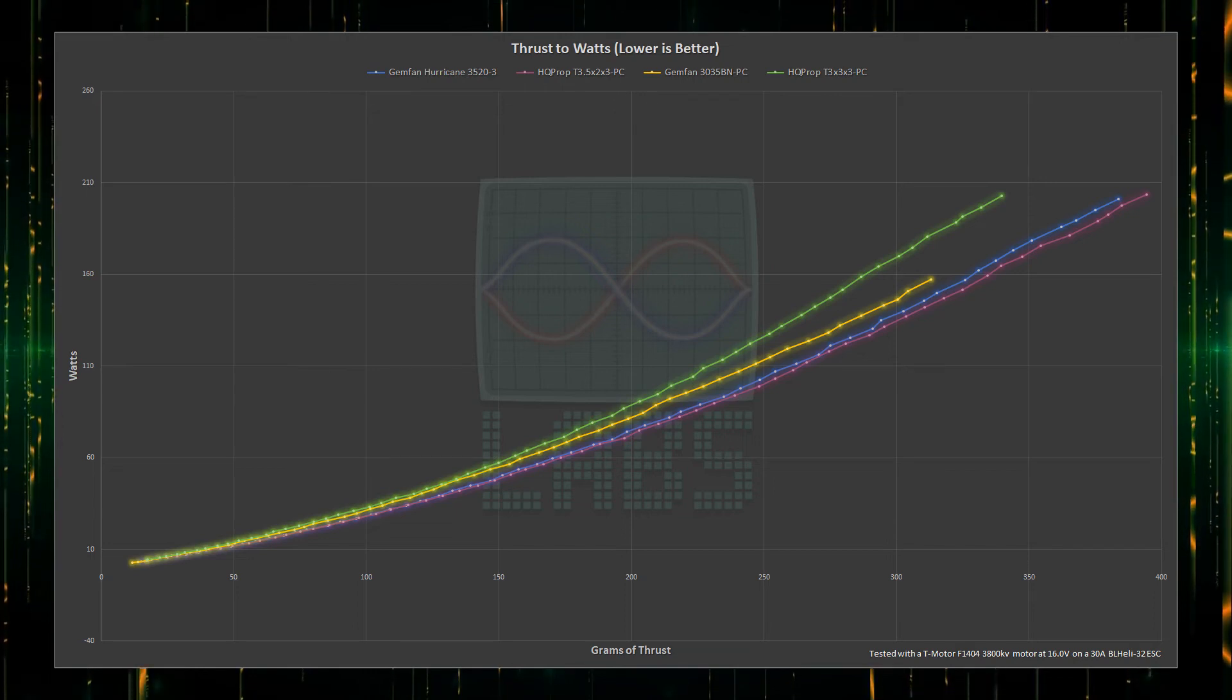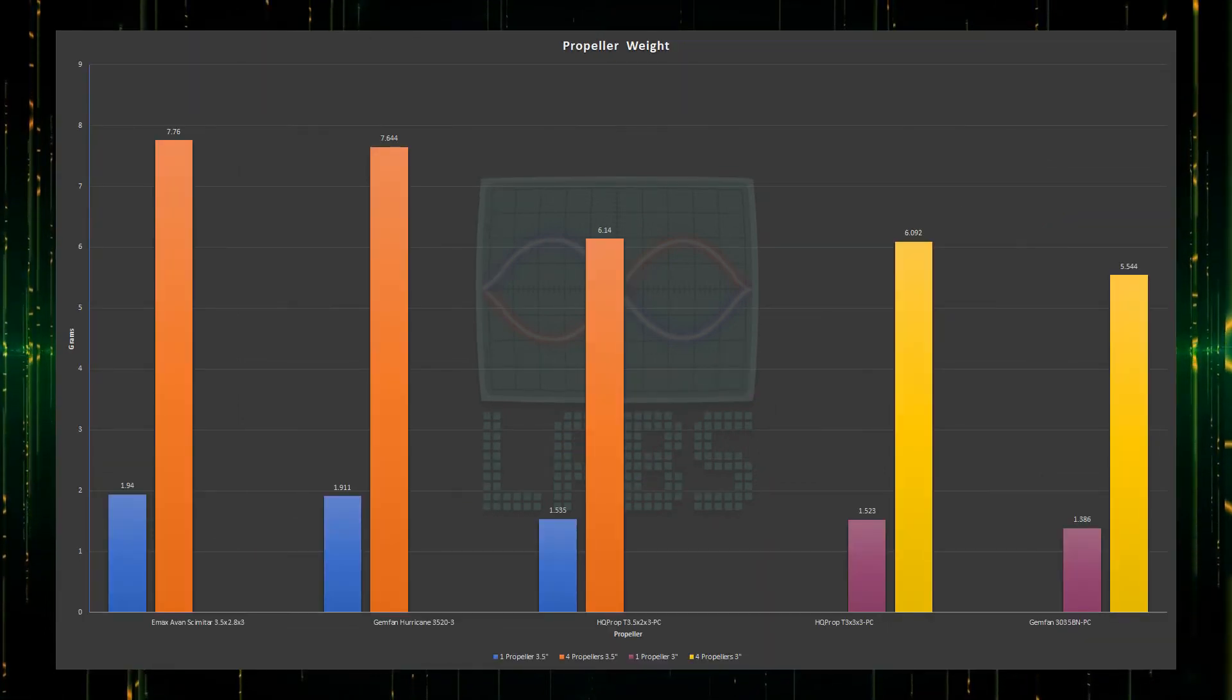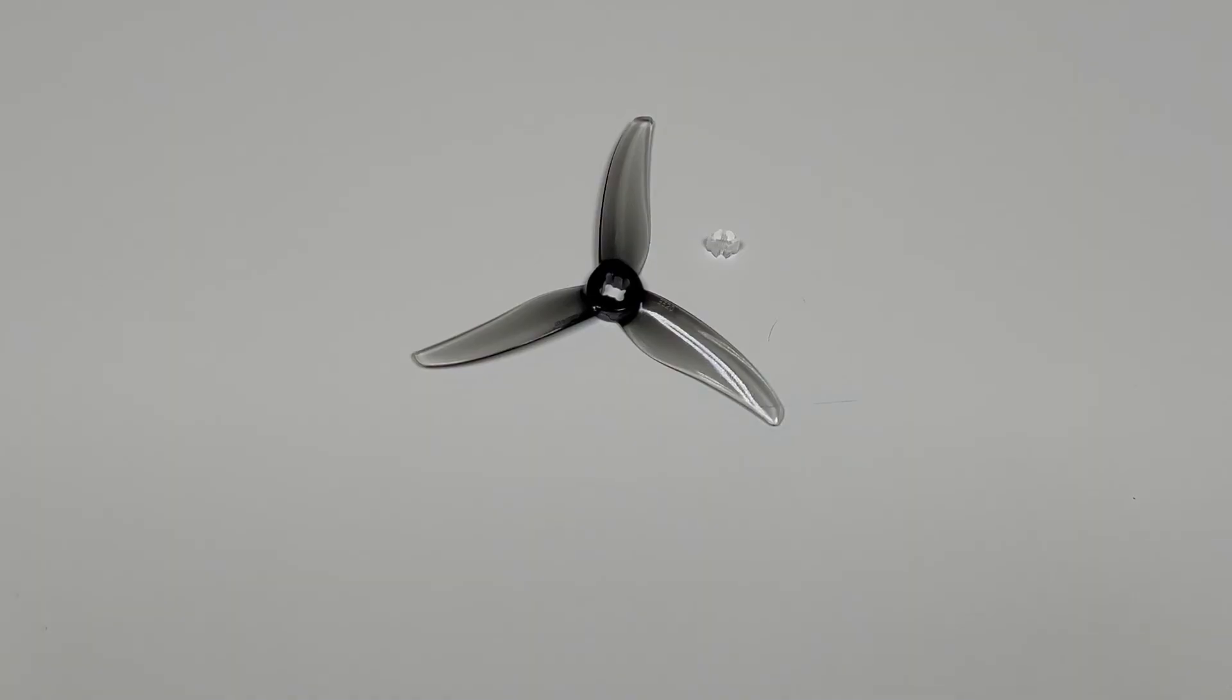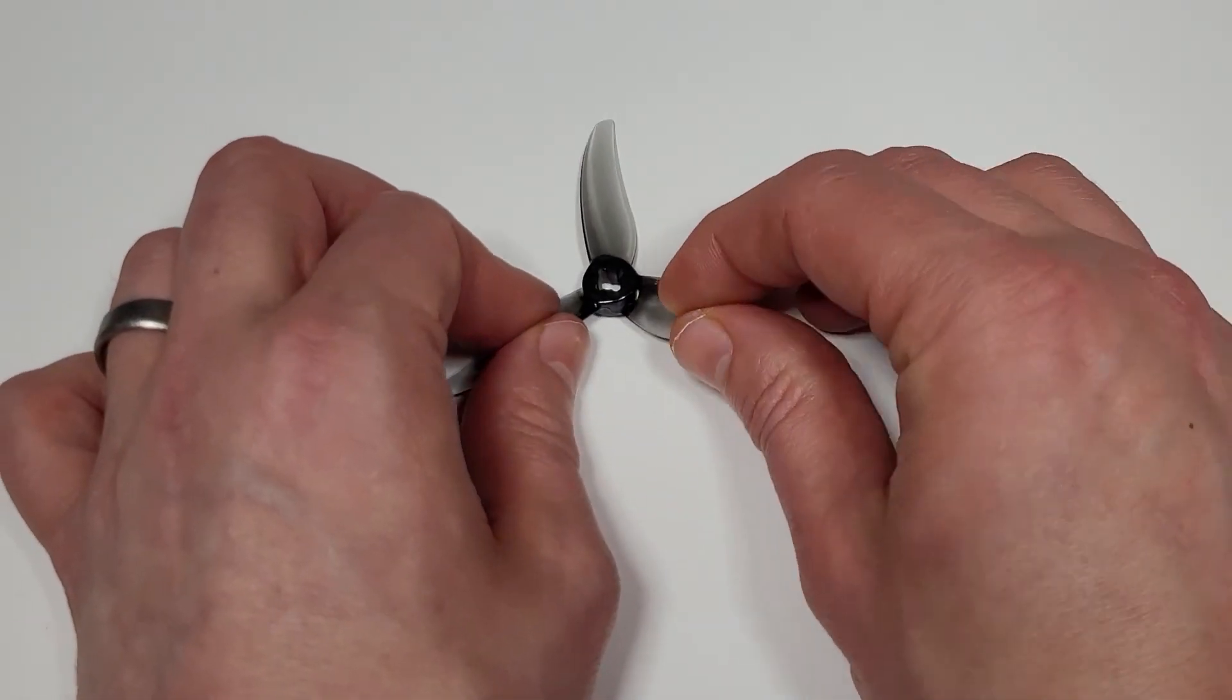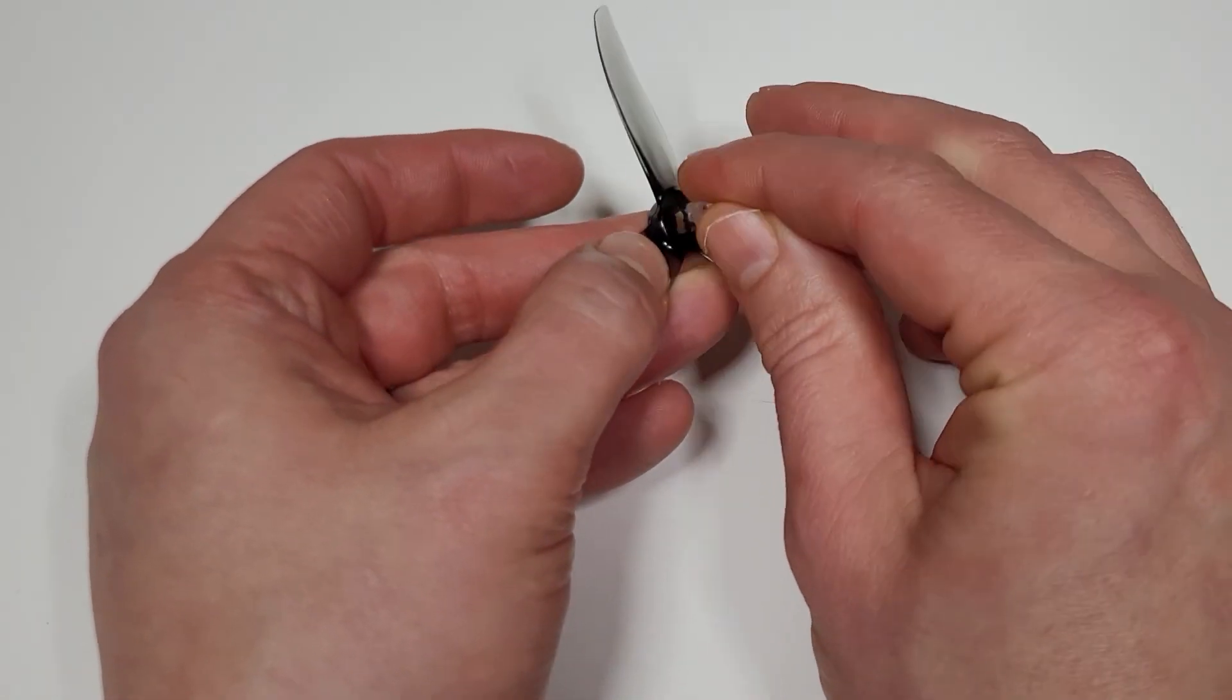As for which one is the best, it's pretty close. But the HQ prop edges out over the Gemfan propeller in top end efficiency and thrust. The HQ prop is 25% lighter, which should help when you need to make fast throttle adjustments. What is unique about the Gemfan, is that it supports both the T-mount and 5mm motor mounts. So if you use both, and want to have only one propeller, this might make the most sense for you.